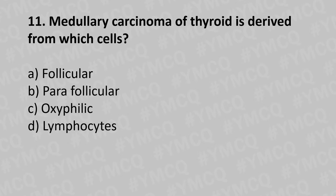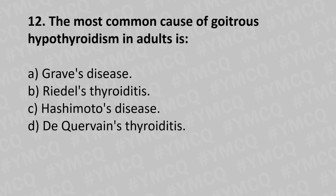Now let's move to question number eleven. Medullary carcinoma of the thyroid is derived from which cells? Option A - follicular, option B - para-follicular, option C - oxyphilic, option D - lymphocyte. The answer is option B - para-follicular.